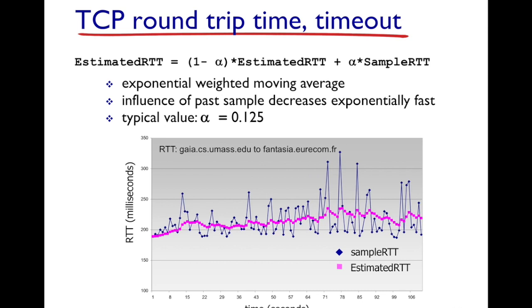Whenever a new sample comes in, we update the estimate based on our current estimate weighted by (1 − α) and the current sample measurement weighted by α. As you can see in this figure — with RTT on the y-axis and time on the x-axis — the blue points are the actual sample RTT values, and the pink line is the estimated RTT, which varies smoothly, captures the trend, and does not react too sharply to changes in sample RTT.